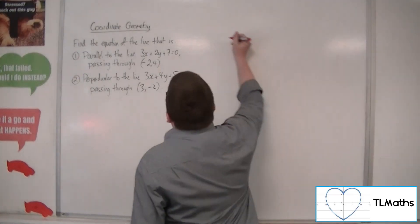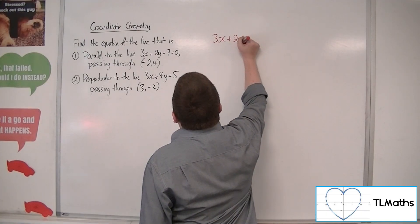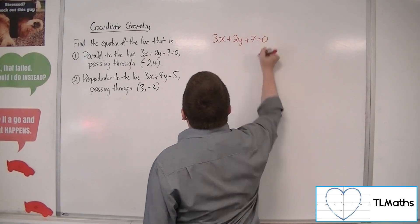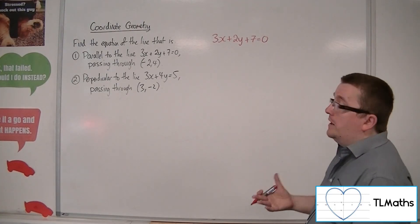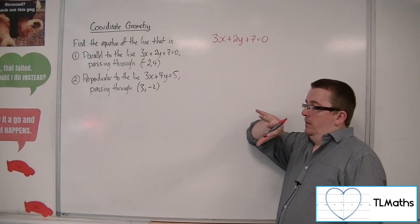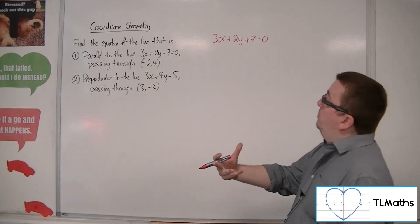Okay, so first of all, starting off with 3x plus 2y plus 7 equals 0, what I need is the gradient of this line. The only way I can get that is by reorganising it into y equals mx plus c.